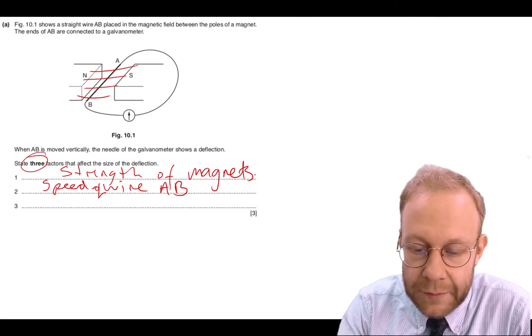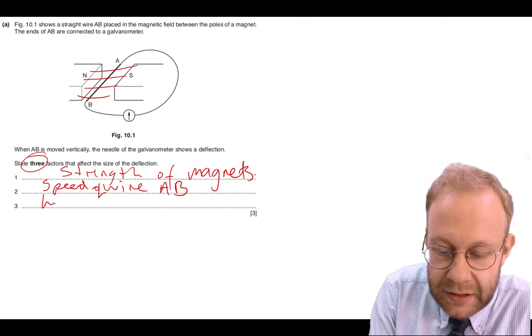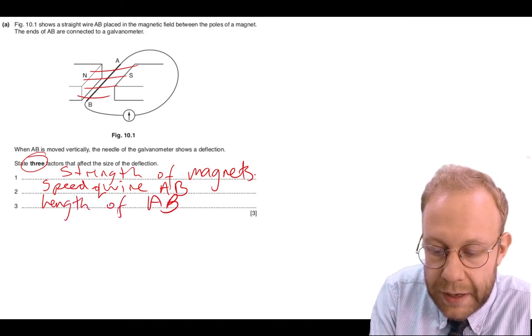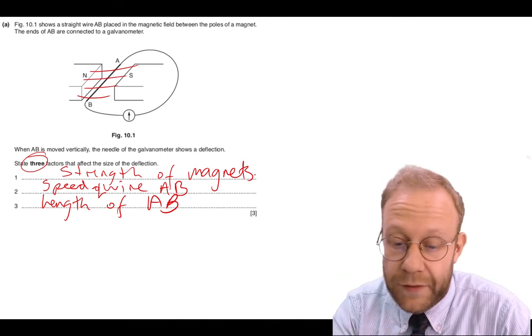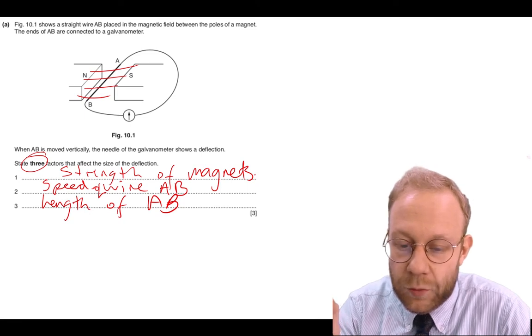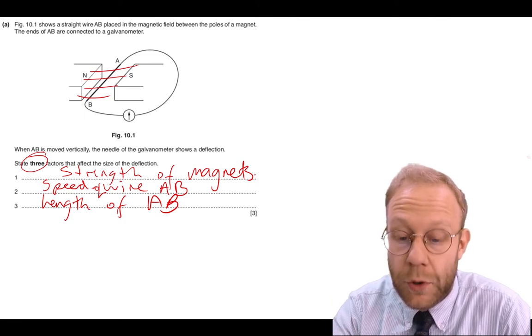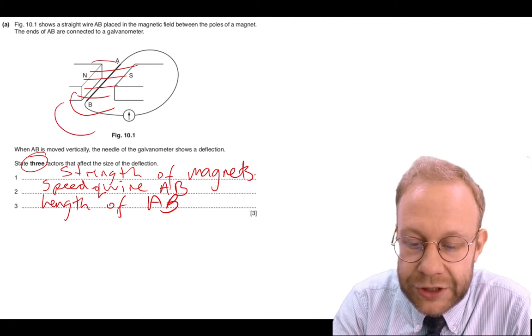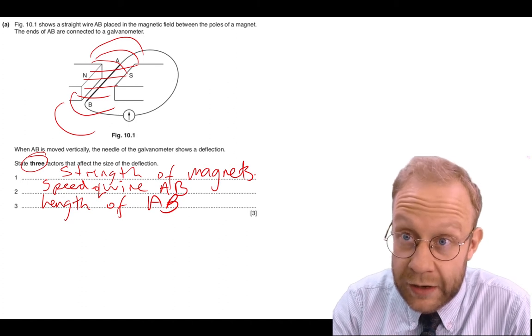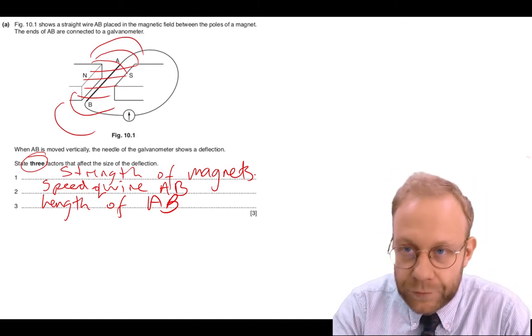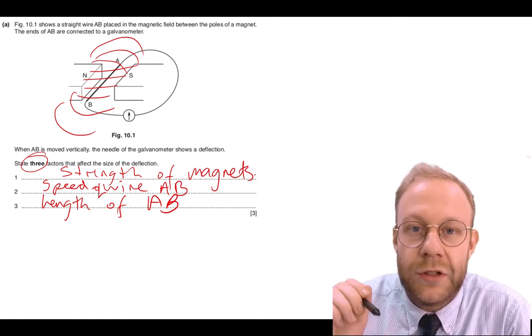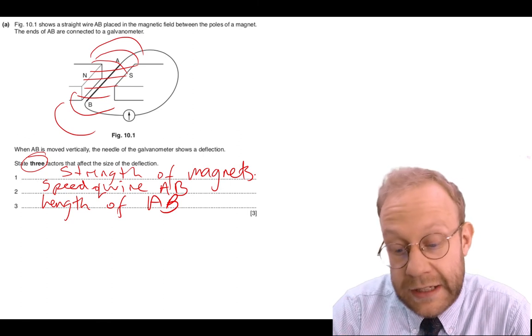The final one is to increase the length of AB. If we increase the length of AB, the region that's within the field, then it's going to cut more field lines. The field lines actually extend outside of this region as well. If we make that wire longer, it's going to be cutting more field lines, and again, we're going to get a greater induced current or greater deflection.